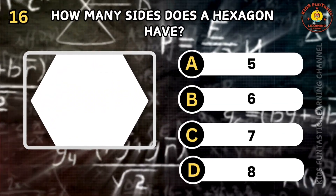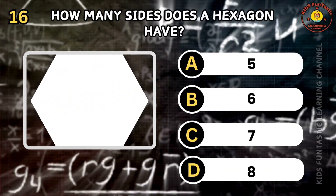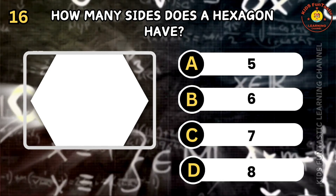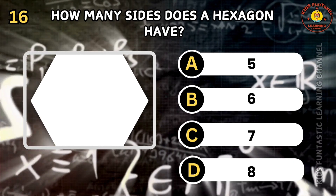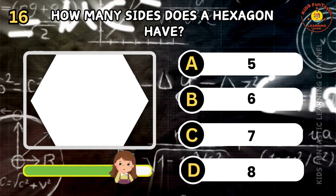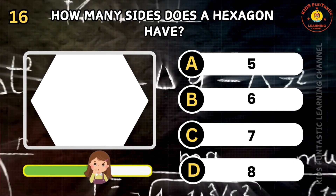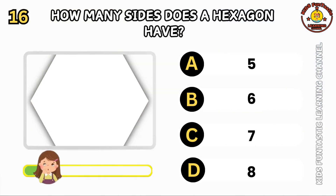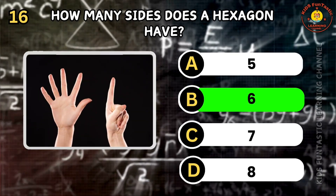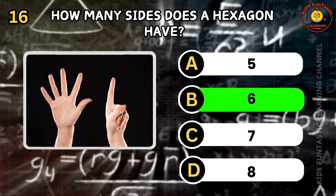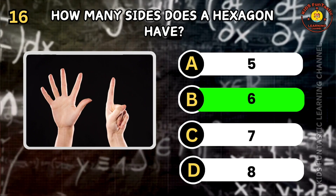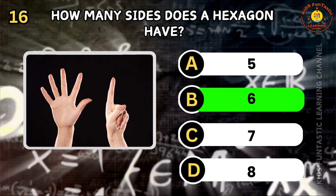Question 16. How many sides does a hexagon have? A: 5, B: 6, C: 7, D: 8. You're doing amazing! The correct answer is B. A hexagon has six sides.